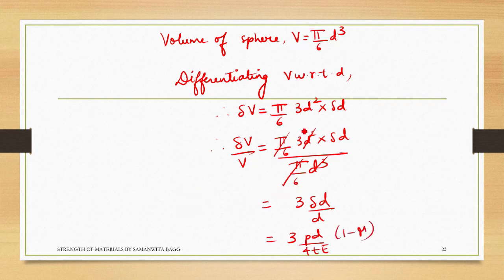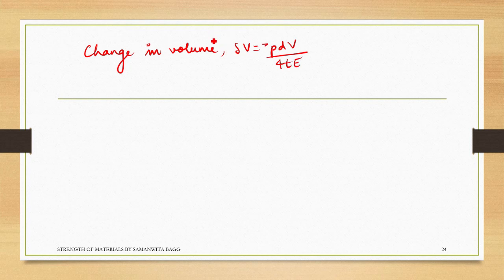Delta_d by d is this term, so this becomes 3pd upon 4tE times (1 minus mu). So for volume I can write down, change in volume delta_V will be pdV upon 4tE multiplied with 3 and (1 minus mu).